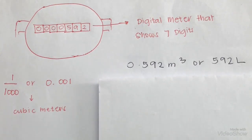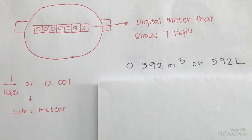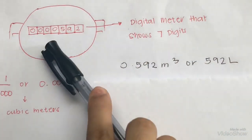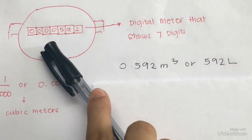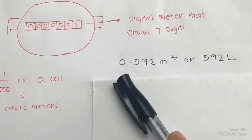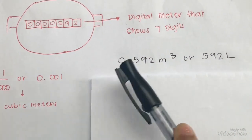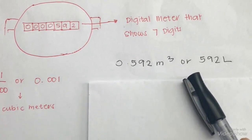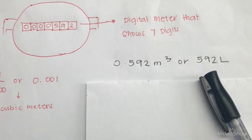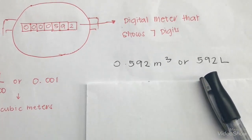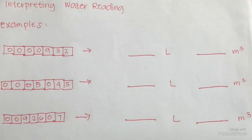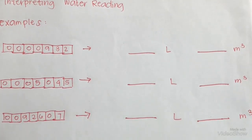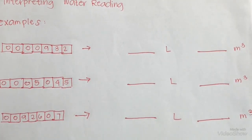So the number of cubic meters consumed based on the given water meter above is 0.592 cubic meters, or 592 liters. Here are examples of interpreting water readings.